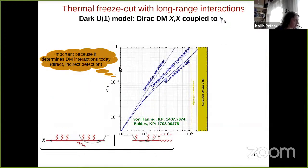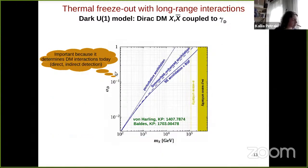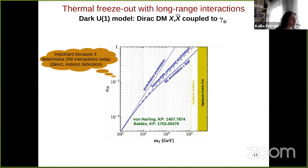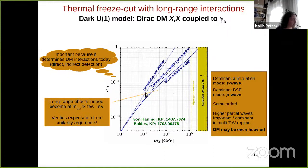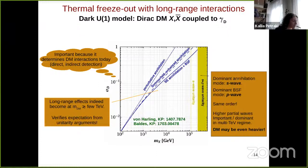The freeze-out calculation gives the correlation between the dark gauge coupling alpha and the dark matter mass, shown for three cases: perturbative annihilation only, Sommerfeld-enhanced annihilation, and Sommerfeld-enhanced annihilation plus bound state formation. This correlation of parameters is what determines the experimental signatures. Long-range effects — Sommerfeld and bound states — start affecting the dark matter density and this parameter correlation at a mass of a few TeV.